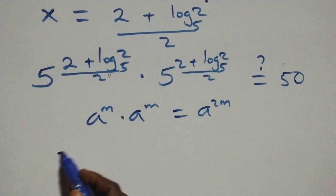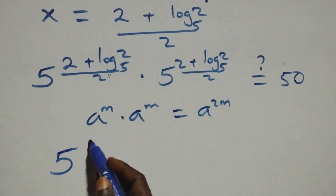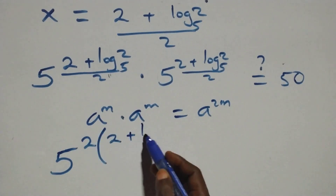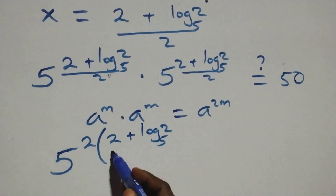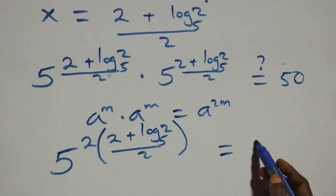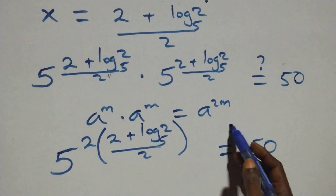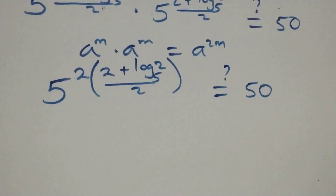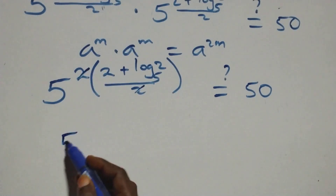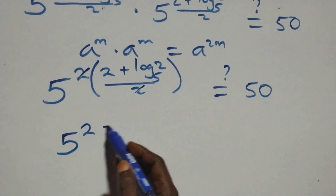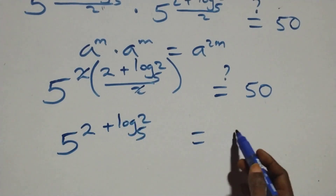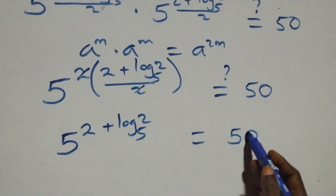So we have 5 raised to power 2 times (2 plus log base 5 of 2, all over 2). The 2 in the numerator and denominator cancel each other. We have 5 raised to power (2 plus log base 5 of 2). Is this equal to 50 on this side?